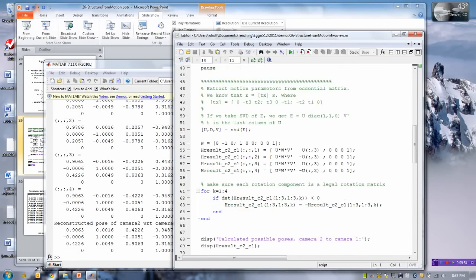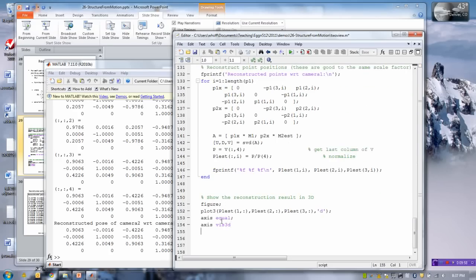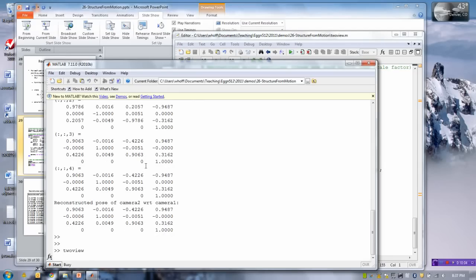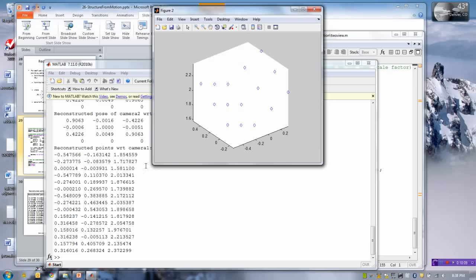So at the very bottom here I'm going to add this code and then just run this. Okay so those are my points, here's my pose, and here are the reconstructed points. And if I rotate this in 3D you can see that the points do indeed appear to lie on the face of a cube like that.